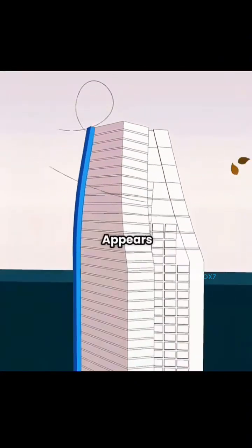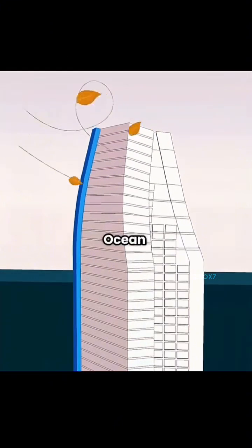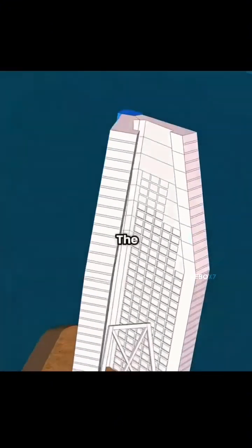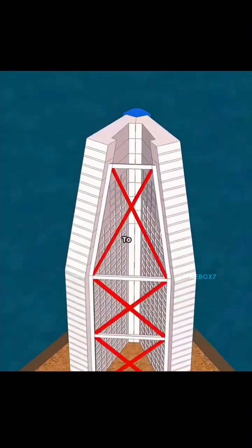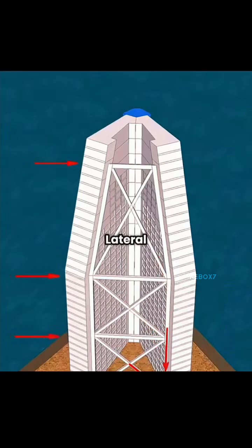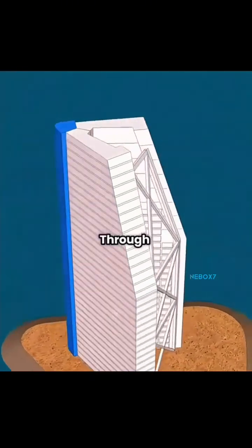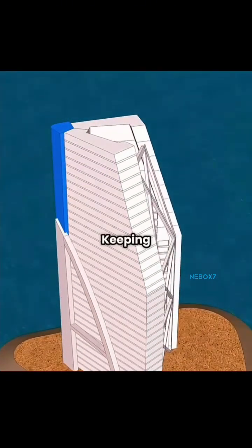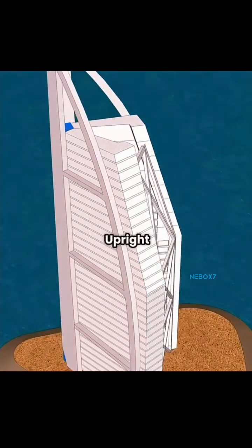But soon, a problem appears. The fierce ocean wind causes the whole structure to sway. To fix it, you add diagonal braces. When hit by strong lateral winds, the force transfers downward through these supports, keeping the tower upright.